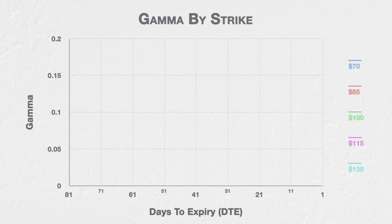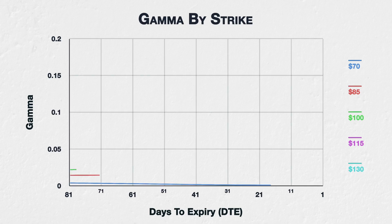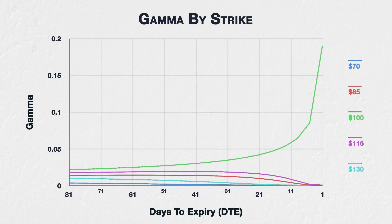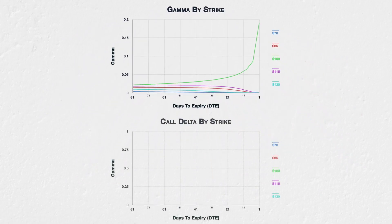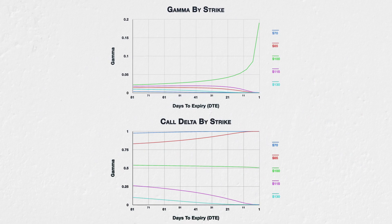Let's now look at five different strike prices to further illustrate how the gamma evolves as time passes. This chart shows the gamma of the 70, 85, 100, 115, and $130 strikes. The x-axis shows the days to expiry, so as we move from left to right on the chart, we can see how the gamma for each of these strikes changes as time passes. If we compare this gamma chart to a chart of the corresponding deltas for call options at those strikes, we can understand why we see these patterns.